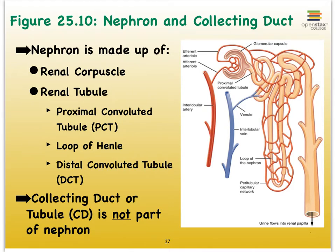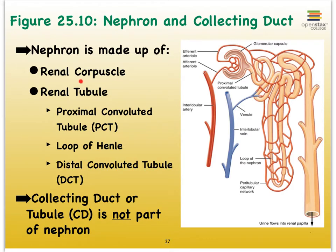If we focus on the anatomy of a nephron, it consists of what we refer to as the renal corpuscle and then the renal tubule. This area here, which looks kind of like a baseball glove with the capillary bed on the inside, that is the renal corpuscle. Remember that the word corpuscle literally means little body. Attached to the renal corpuscle, we have this very squiggly tube, and we refer to that as the renal tubule.